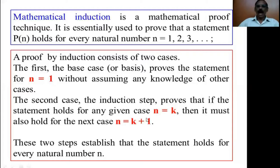The second step is, we have to assume that the given statement is true for n is equal to k. The third step is, we have to prove the given statement for n is equal to k plus 1.